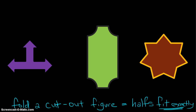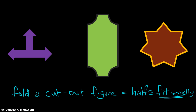Let me give you an example. Let's say I have these three figures here. Where is the line of symmetry for this figure? If you observe, the line of symmetry is here. So this is the line of symmetry for this figure.